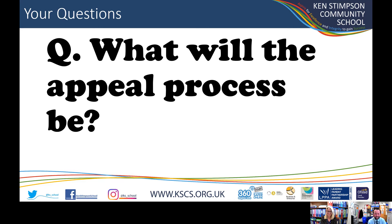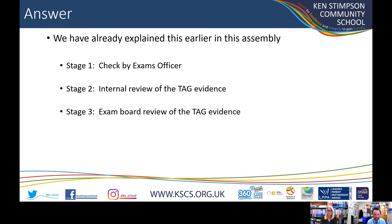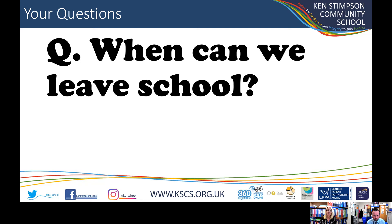The appeal process has three stages: Stage 1 is a check by the exams officer; Stage 2 is the internal review; Stage 3 is the exam board review. There are also suggestions there's going to be an autumn exam series this year, just as there was last year — with exams in November — so if you're still not happy with your TAG grade, you'll have the chance to actually sit the exam. That hasn't been finalised yet but that's what they did last year and we believe it may be the case again.